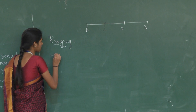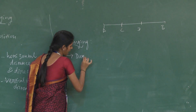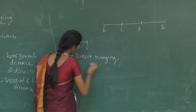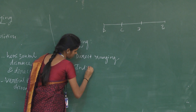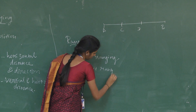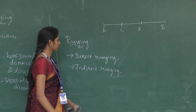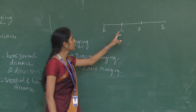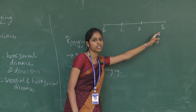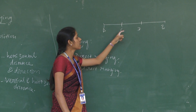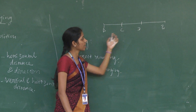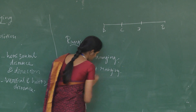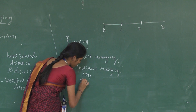There are two methods of ranging: direct ranging and indirect ranging. If points C and D are visible from points A and B, we adopt direct ranging. If C and D are not visible from A and B, it is indirect ranging — also called reciprocal ranging.